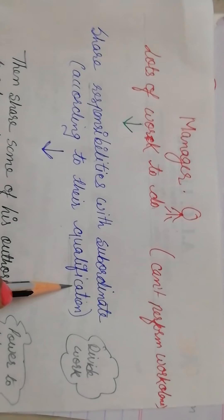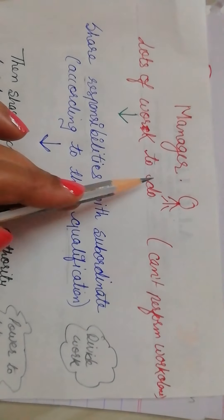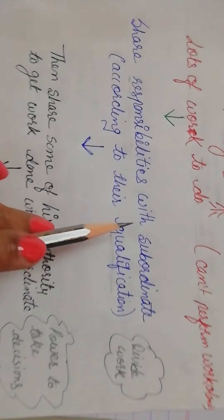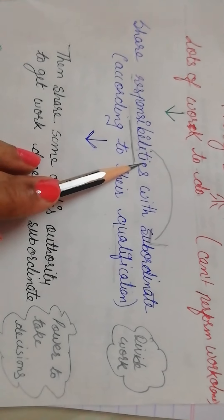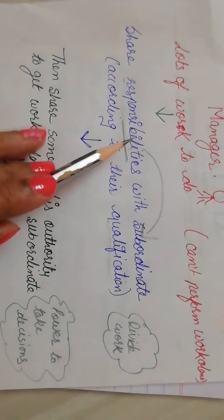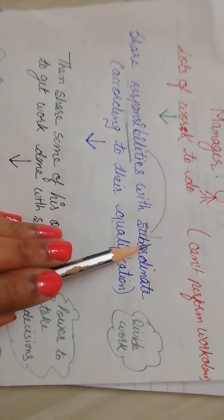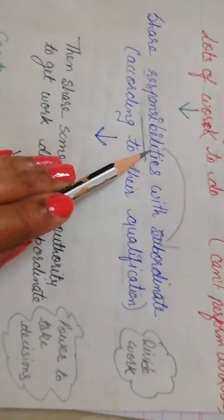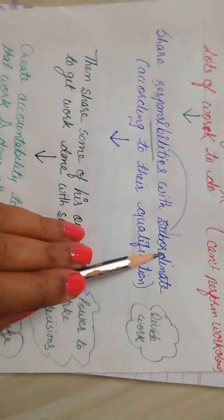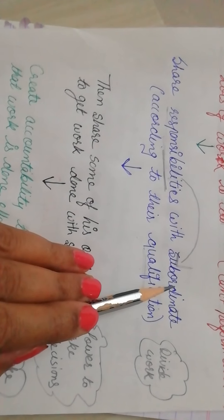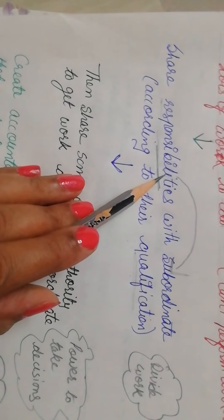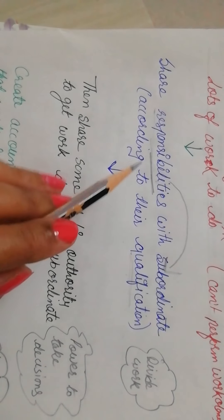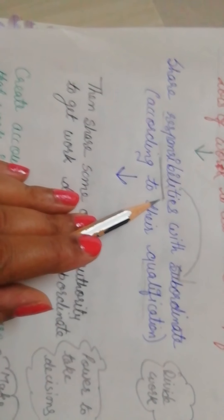Your work will be divided. When you transfer responsibilities to a subordinate, you also have to transfer a little bit of authority to them. For example, if parents go out of the house, they give you their responsibilities — you are the subordinate at that time and they are the superior. They give you authority, for example, keys of the house or keys of the almiras.